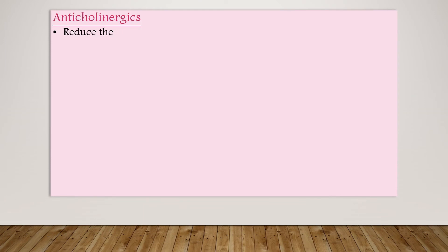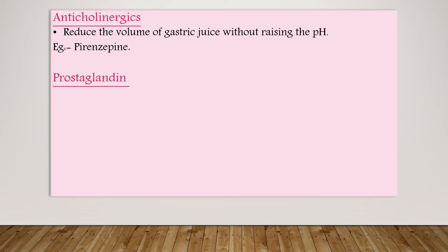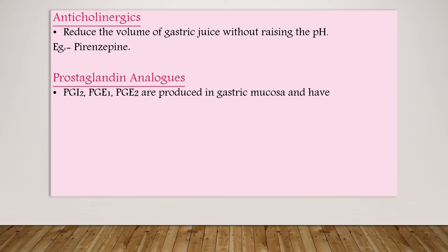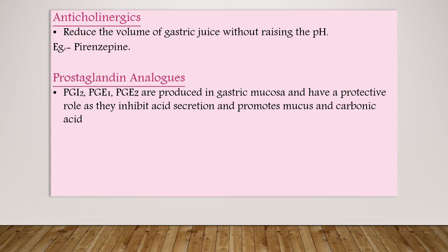Anticholinergics are drugs that block the action of acetylcholine. They reduce the volume of gastric juice without significantly raising the pH. An example is pirenzepine. The introduction of H2 blockers and proton pump inhibitors has largely sent them into disuse.